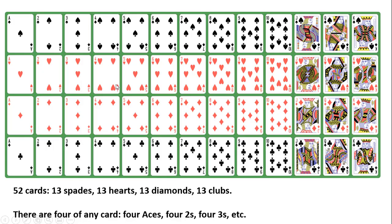So first, in general, a deck of cards contains 52 cards. There are four suits: spades, hearts, diamonds, and clubs. There are 13 spades, 13 hearts, 13 diamonds, and 13 clubs.